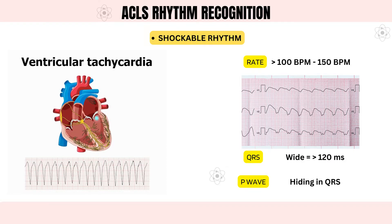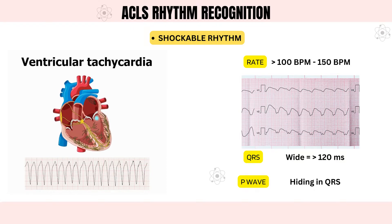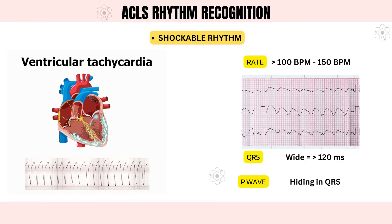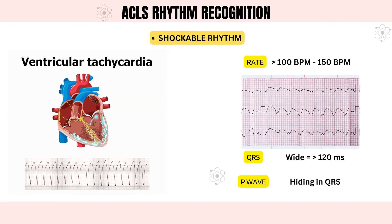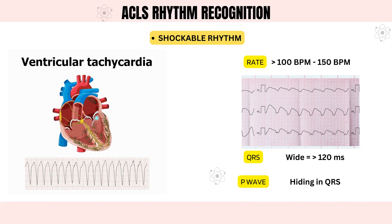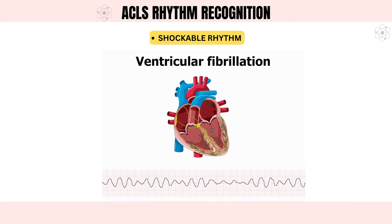VT usually originates in the ventricle at a rate of 100 beats per minute. This can be hemodynamically unstable, resulting in severe hypotension, and thus be life-threatening. When an AED detects VT on a monitor, a shock is advised.